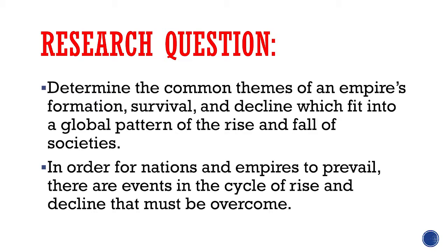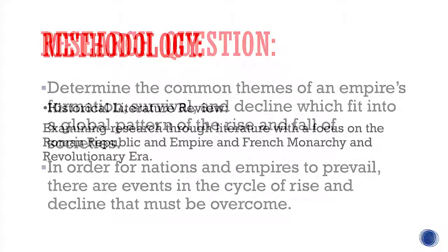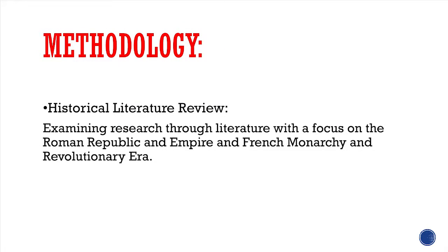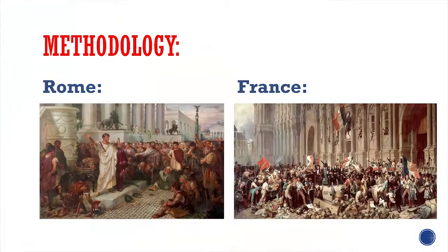I was looking for common themes that can be applied to current nations, which we can use as warning signs or as a catalyst for change or decline. The methodology used was a historical literature review examining literature based on the Roman Republic and Empire, and the French monarchy, revolutionary era, and empire. I chose these two empires because they demonstrate the political, social, and economic factors that enable the evolution of empires and the displacement of longstanding political institutions, as well as their importance as great powers and their enduring influence within and beyond their borders.